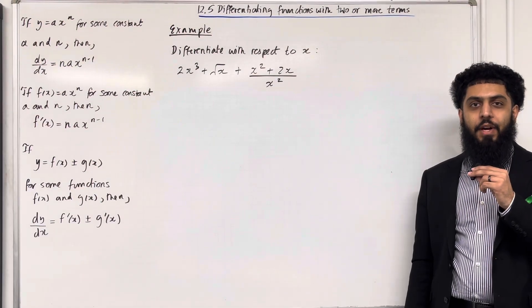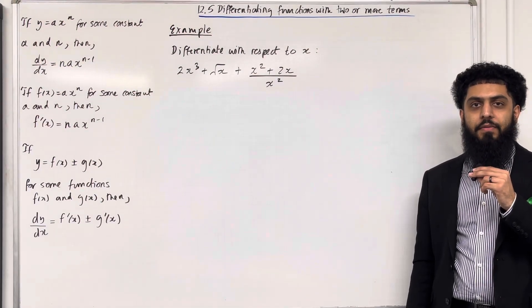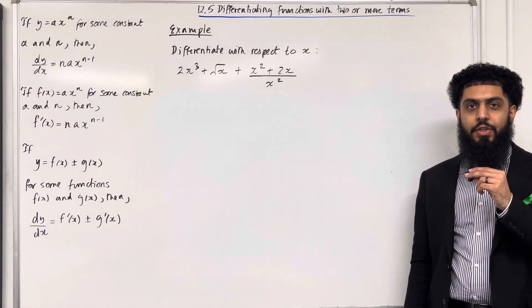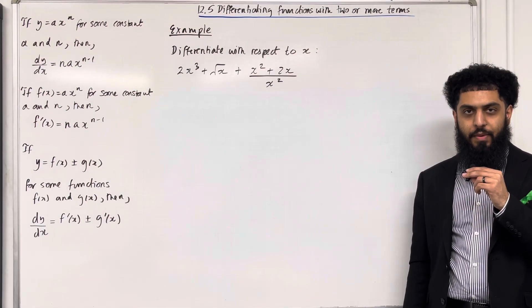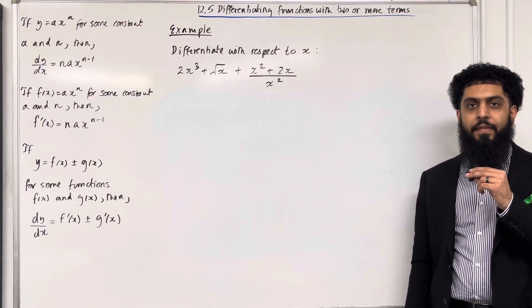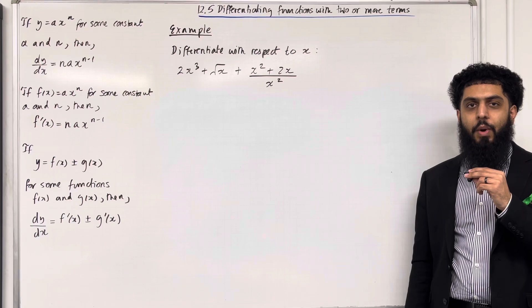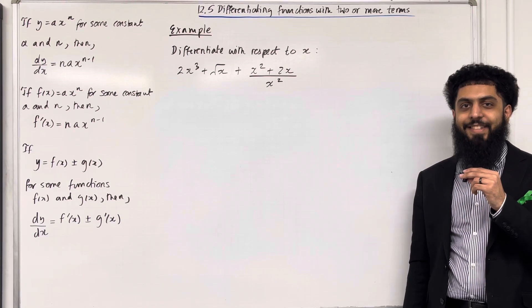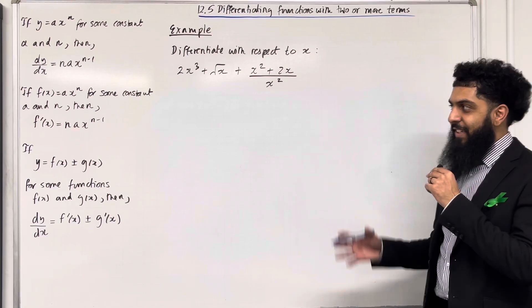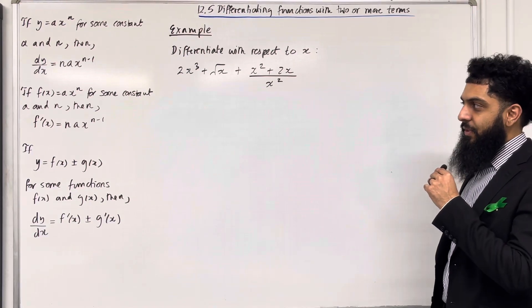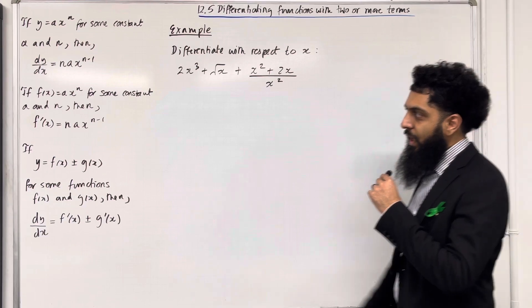Welcome back. In this teaching video, I'm looking at 12.5: differentiating functions with two or more terms. 12.5 represents chapter 12, section 5 of the Pearson A-level Pure Mathematics Year 1 textbook. Let's have a look at the key facts of this section.